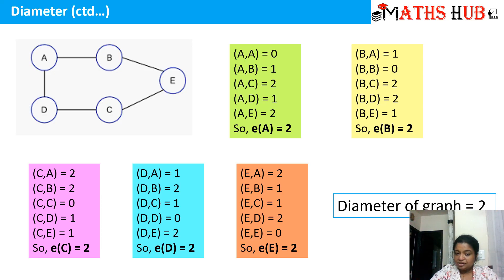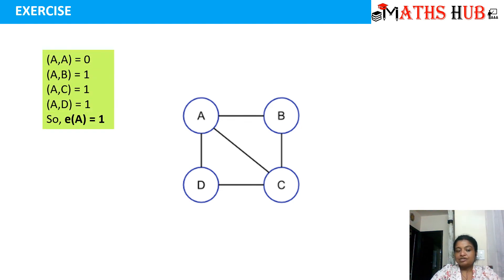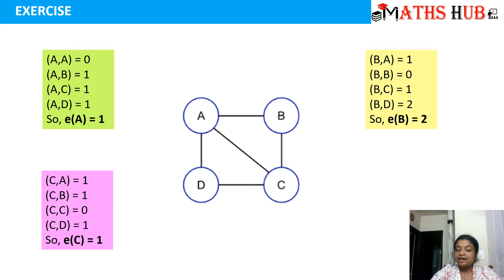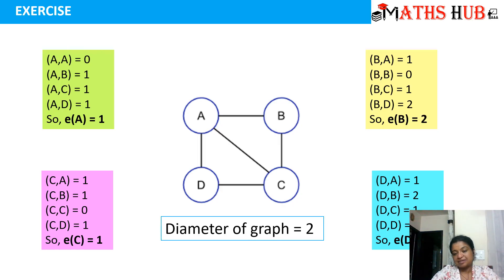Suppose if the eccentricities were different, then we would choose the maximum of all the eccentricities. Let's do one more example. In this graph we calculate the diameter: the eccentricity of vertex A is 1, eccentricity of vertex B is 2, eccentricity of vertex C is 1, and eccentricity of vertex D is 2. So we have 1 and 2, and the diameter of this graph becomes 2, the maximum of all.